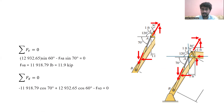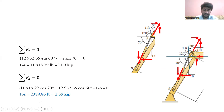The force in link AD acts in the opposite direction. Solving this gives the force in link AD equal to approximately 2,389.86 lb, or 2.39 kip.